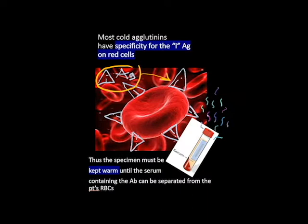Most cold agglutinins have a specificity for the I antigen, found on almost all adult human red cells. The specimen must be kept warm until the serum containing the antibody can be separated from the patient's red cells, which contain the I antigen.